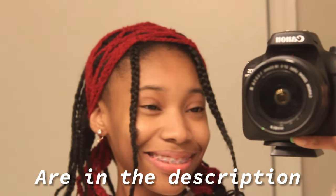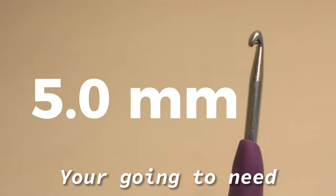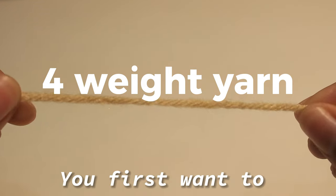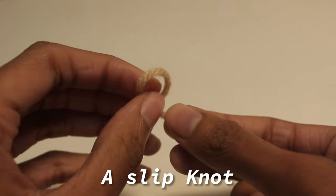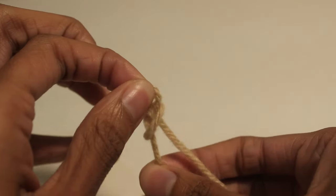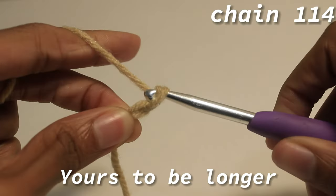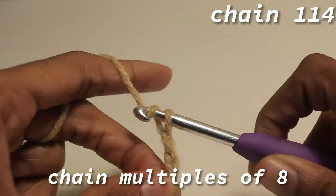The materials I used are in the description below. To begin, you're going to need a 5 millimeter crochet hook and a 4 weight yarn. You first want to start off by making a slip knot and adding it onto your hook. Next, chain 114, or if you want yours to be longer, then chain multiples of eight.